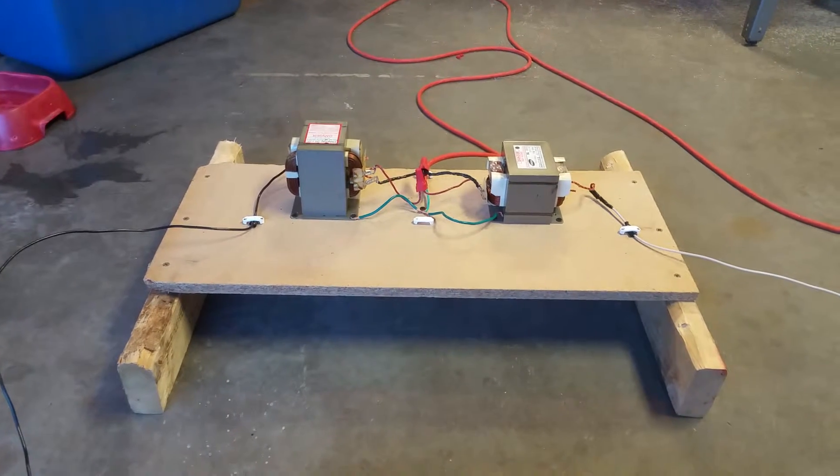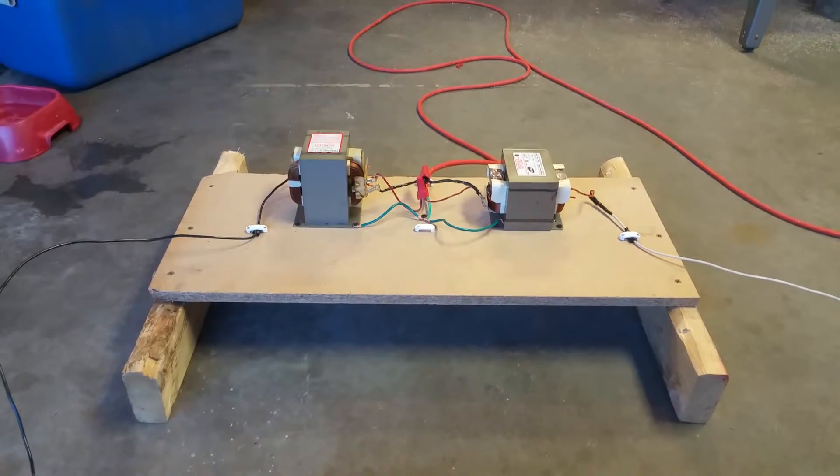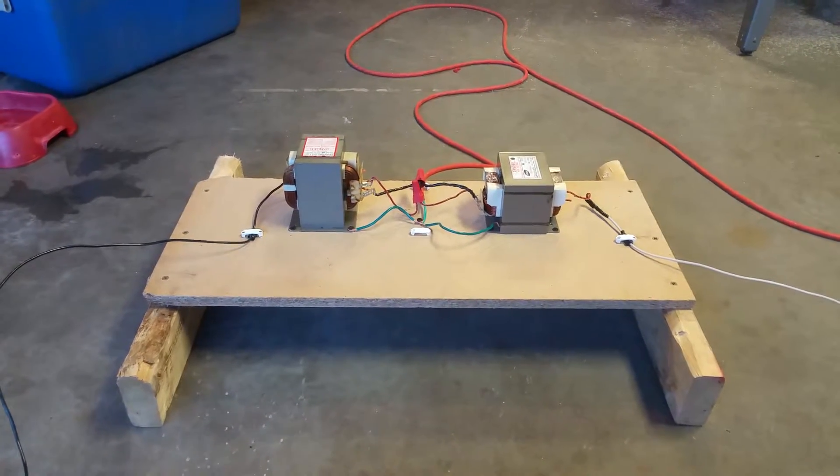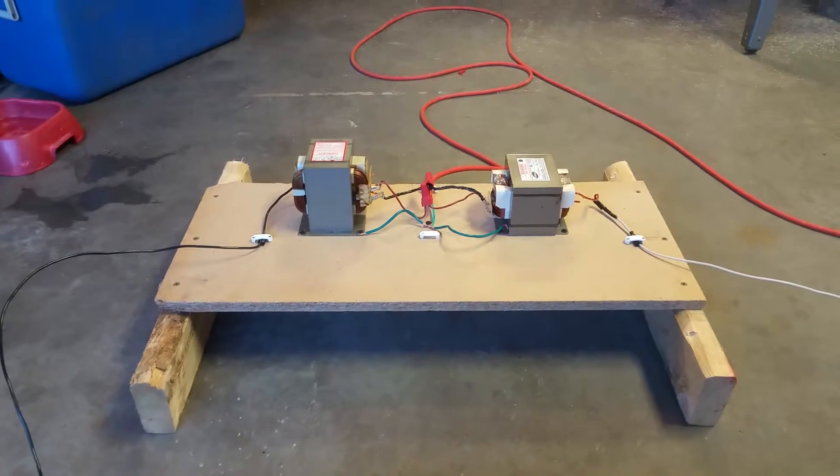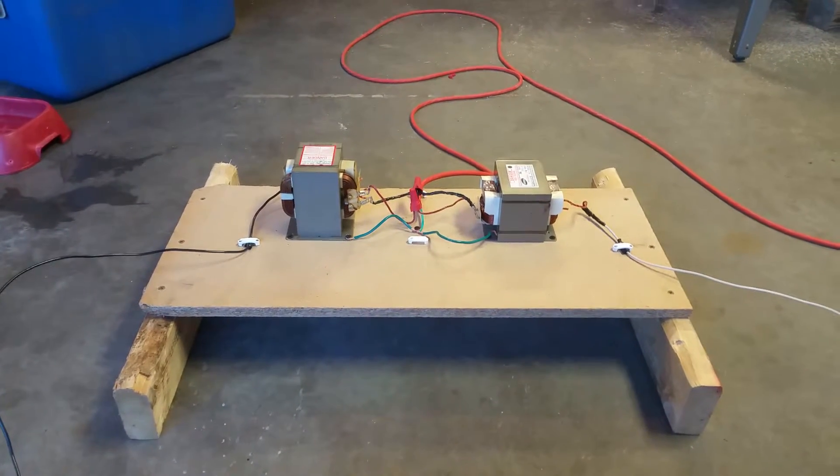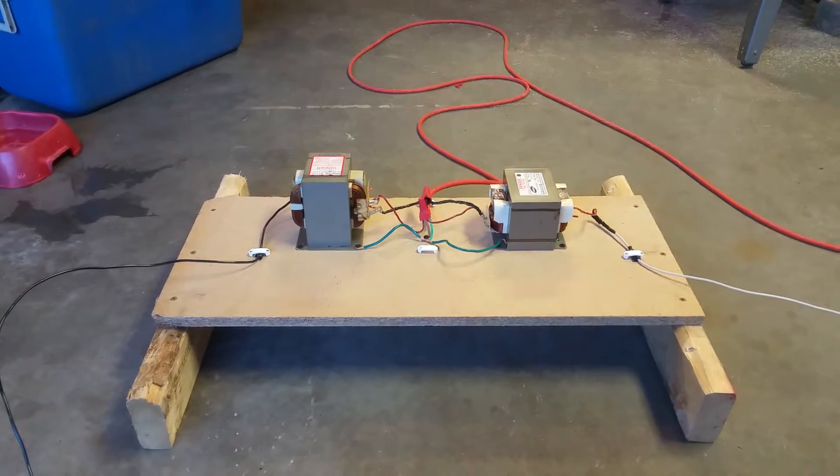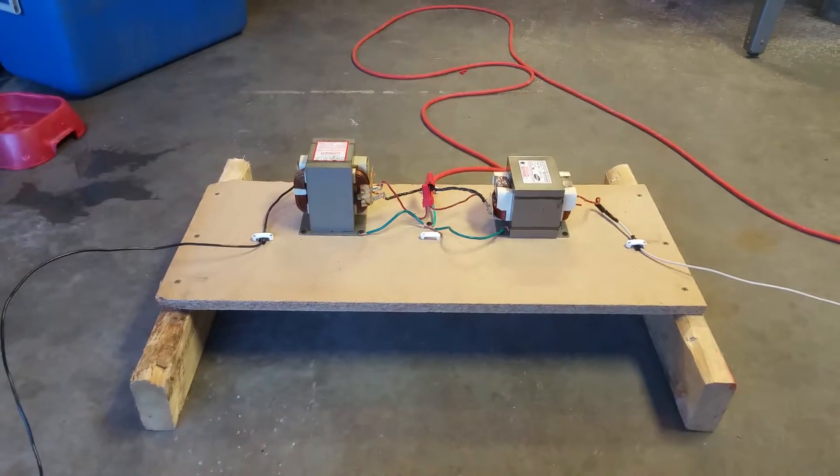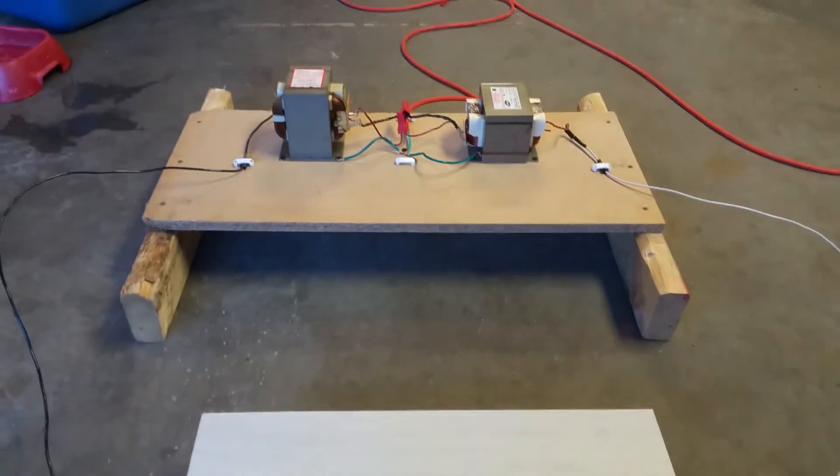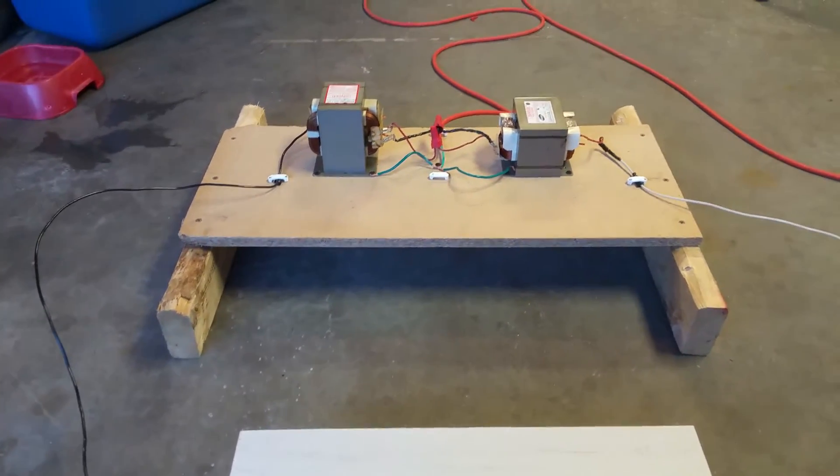Each one of these transformers is capable of over 2,000 volts of electricity, so this setup you've got right here is 4,000 volts of electricity at 60 amps. If you come into contact with that, it will turn you into Don King and send you to the morgue.